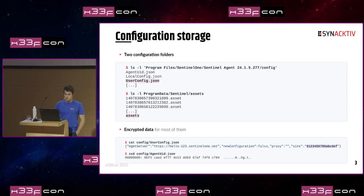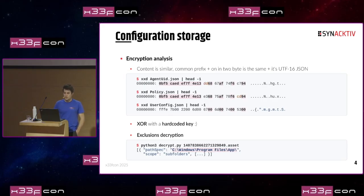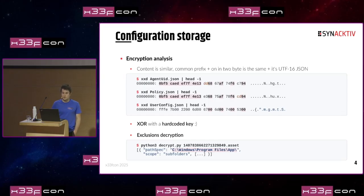If we look inside these folders for the specific files, we quickly see that most of them are encrypted, with a single one which is not — called user-config.json. If we look closer at the encryption system, we quickly notice very similar content. There is a common prefix for each of these files, and one in two bytes is actually the same.